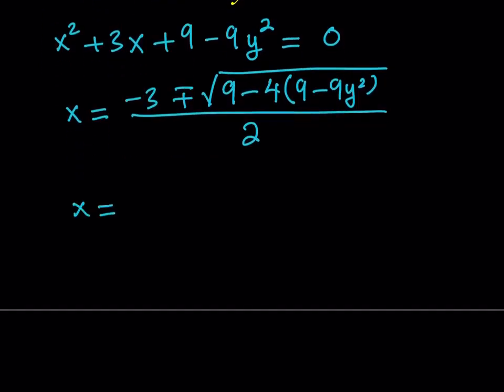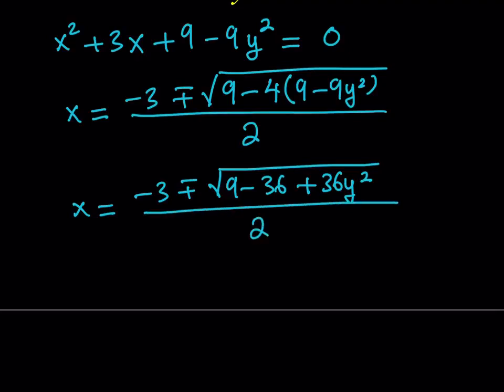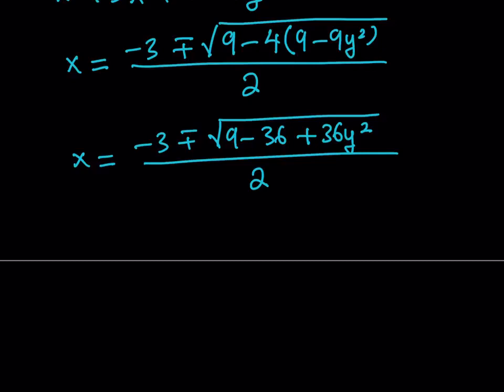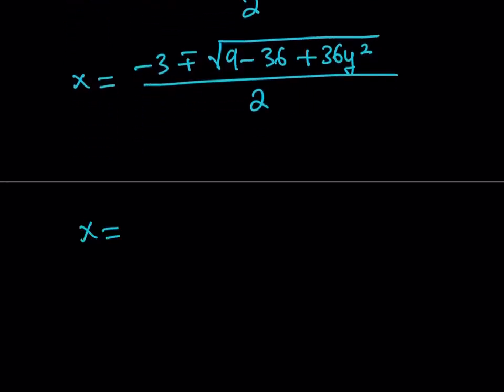So now, x is equal to negative 3 plus minus the square root of 9 minus 36 plus 36y². Negative 4 times negative 9 is positive 36y². That's going to be under the radical. Now, we can definitely simplify this because 9 minus 36 is negative 27. So I can write it as negative 3 plus minus the square root of 36y² minus 27.